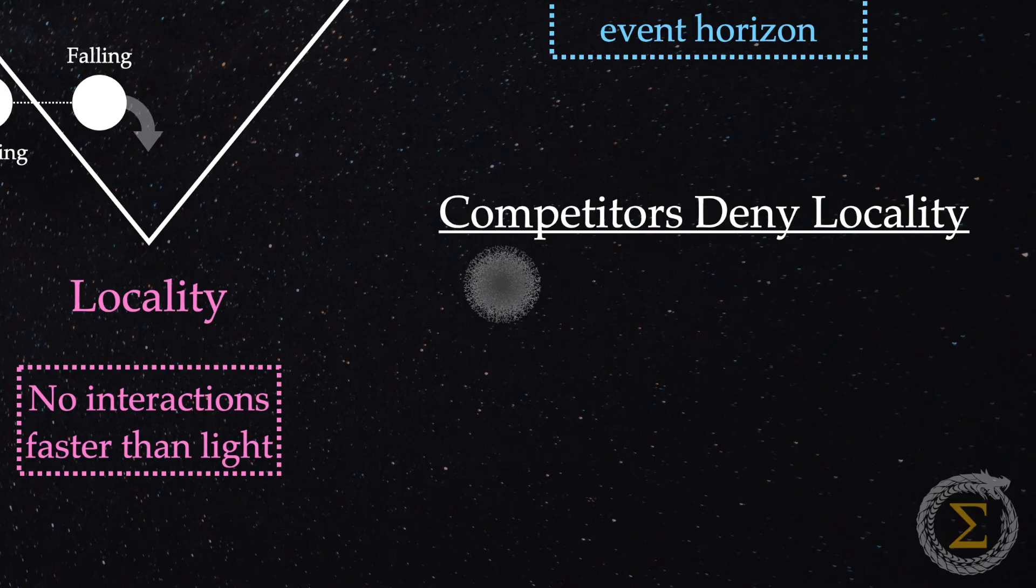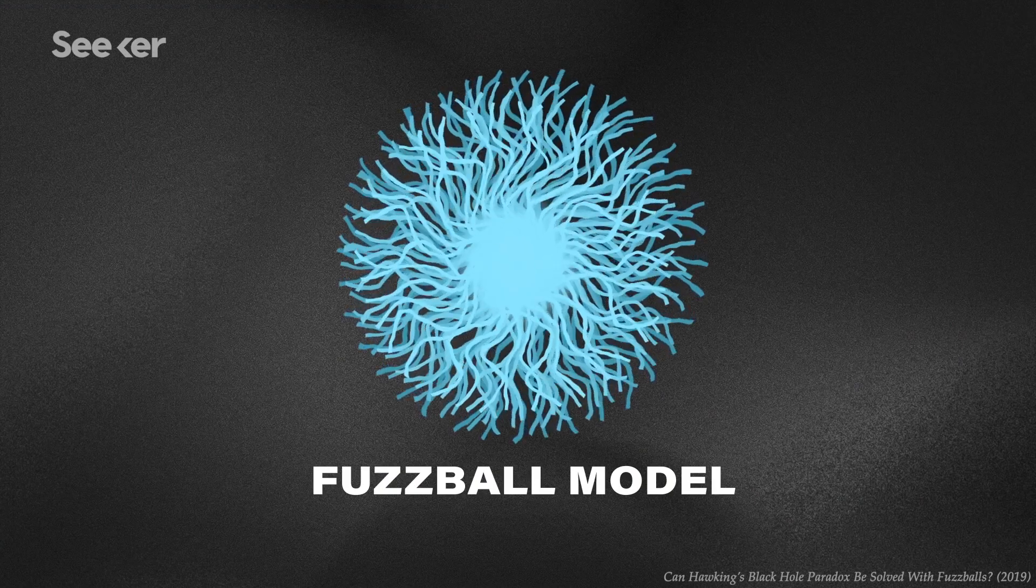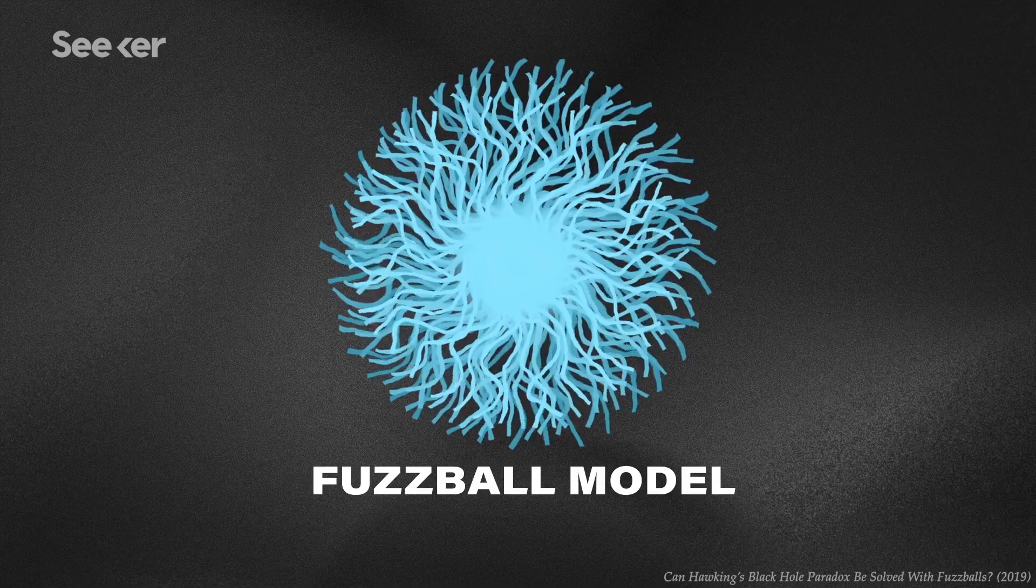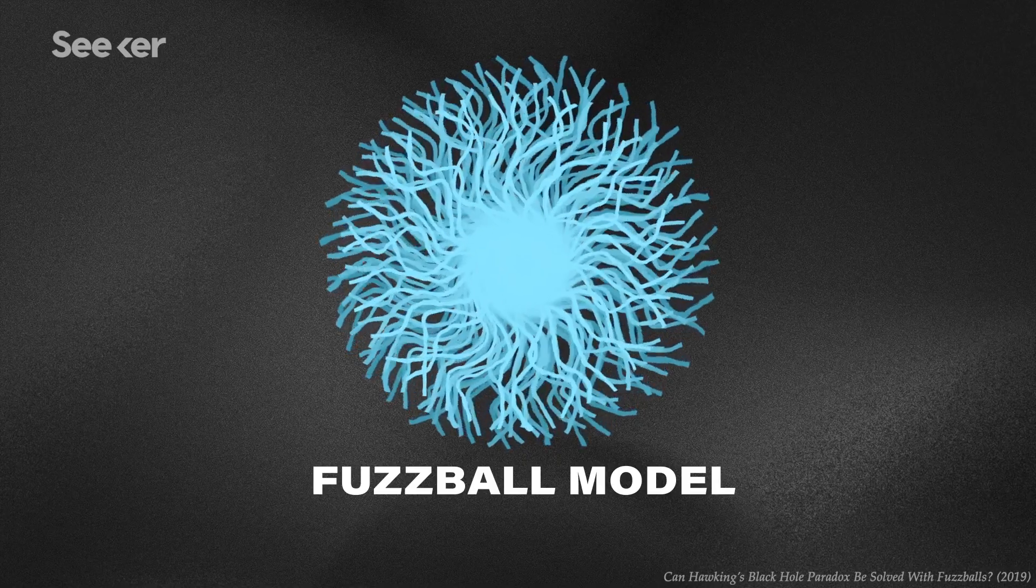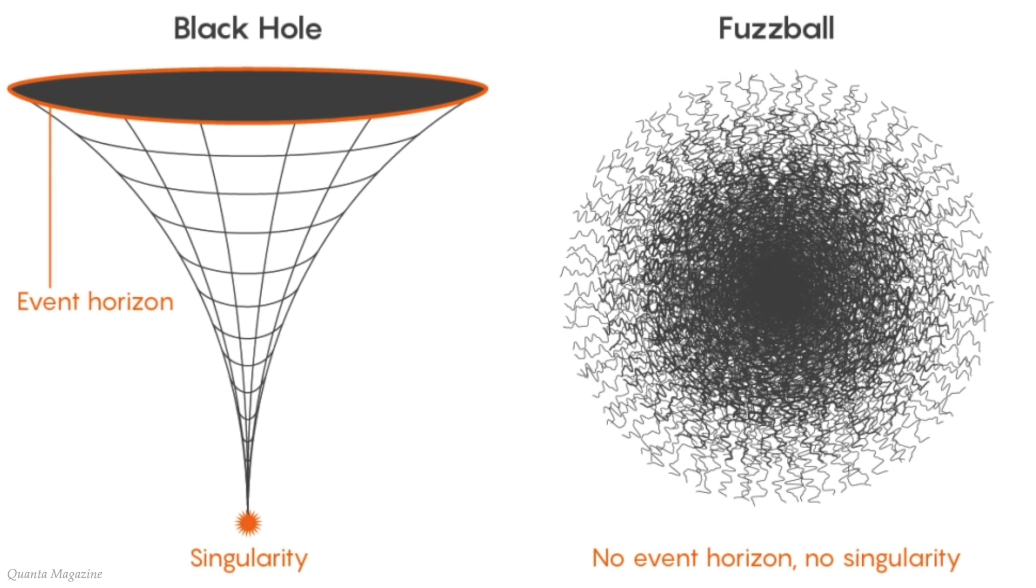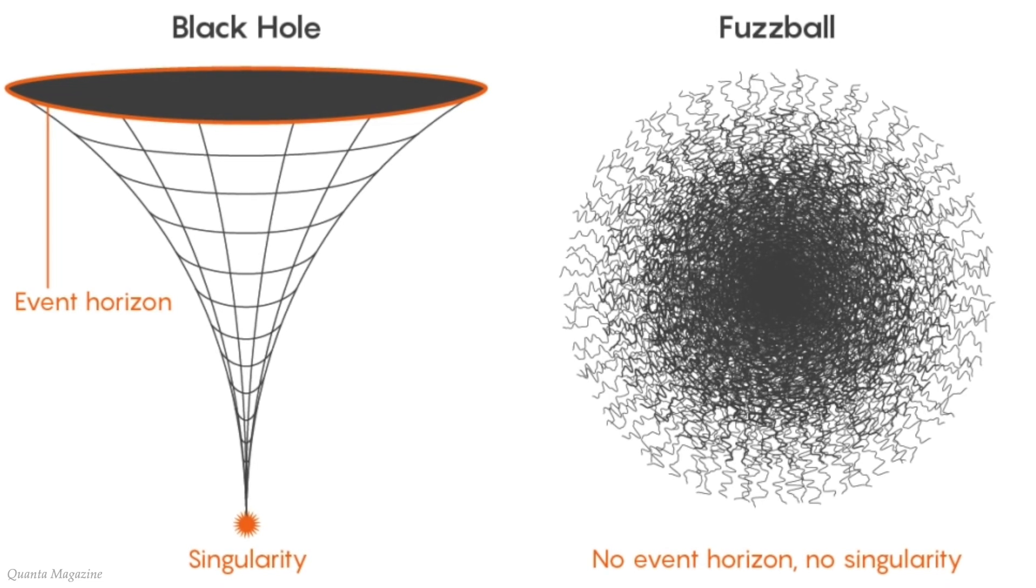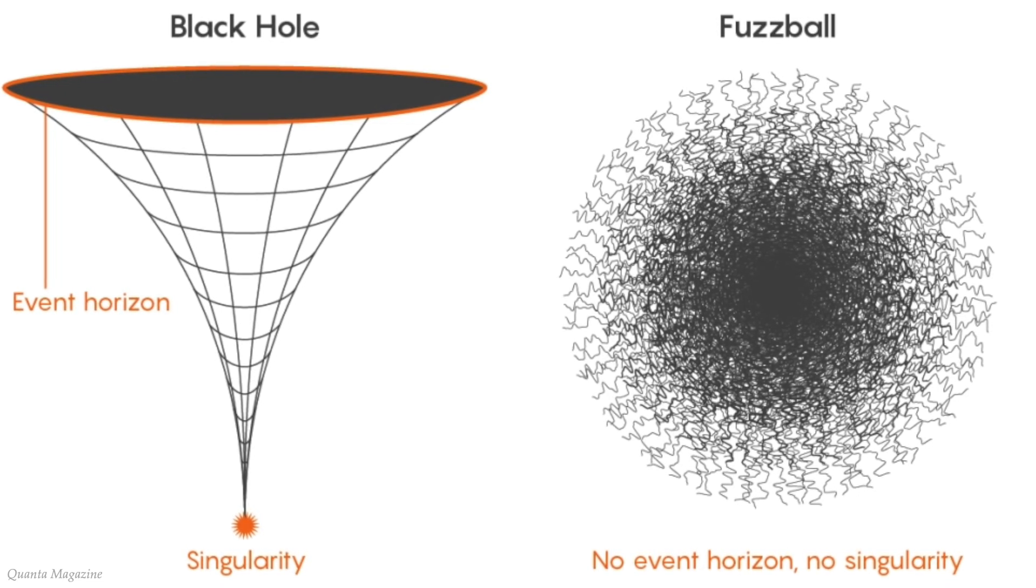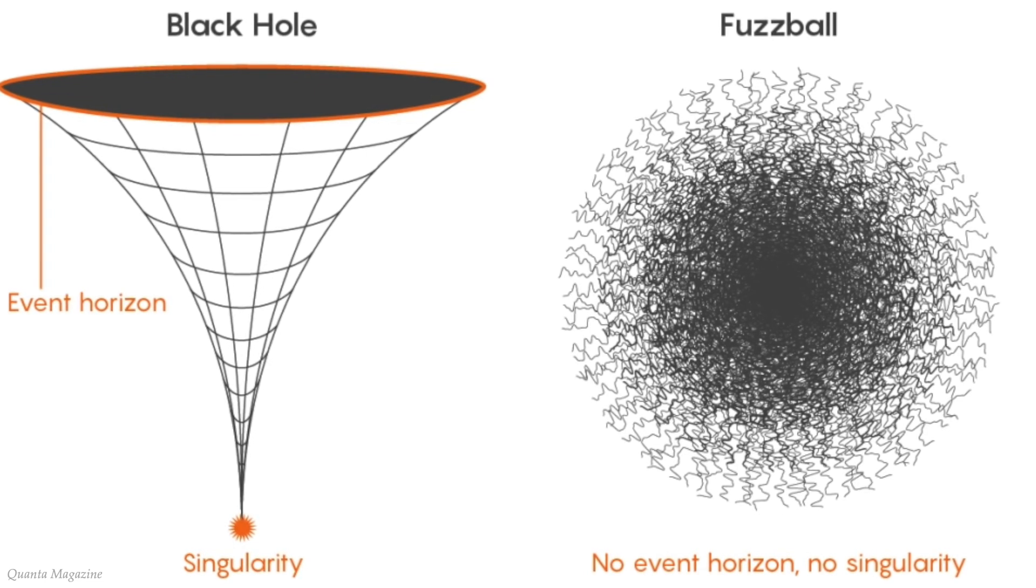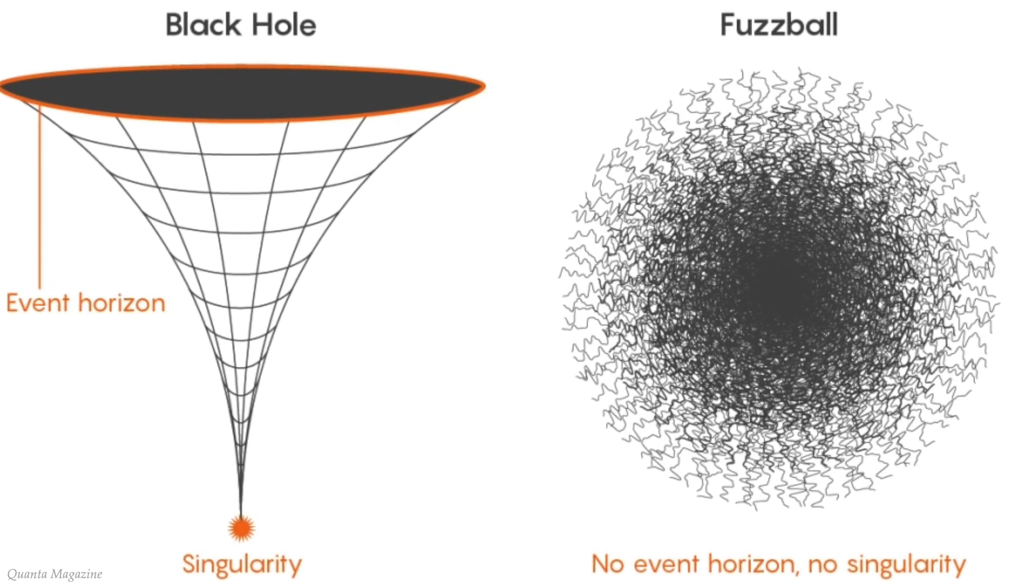First, we have Samir Mathur's fuzzball proposal, which replaces the traditional black hole model with a stringy quantum state. Here, the event horizon becomes a fuzzy structure that couples outgoing Hawking radiation with the black hole's formation history, potentially maintaining information without violating the equivalence principle. However, it necessitates abandoning the classical view of black holes.